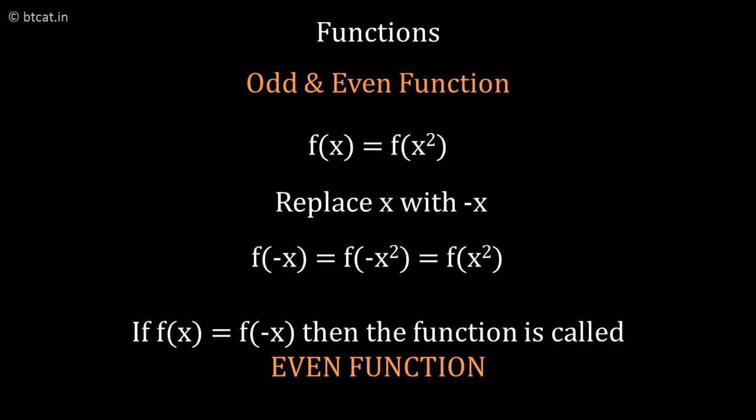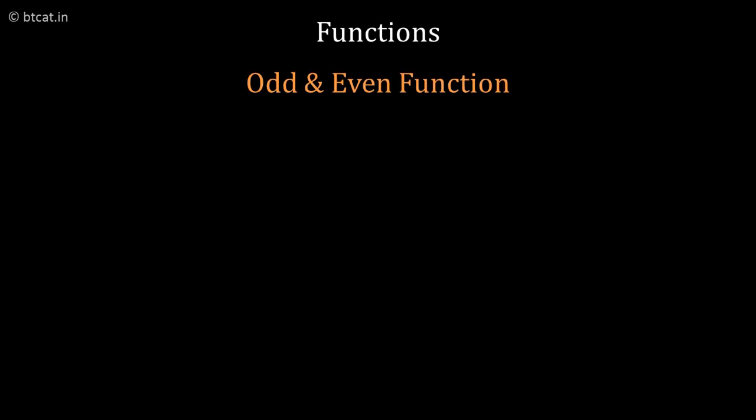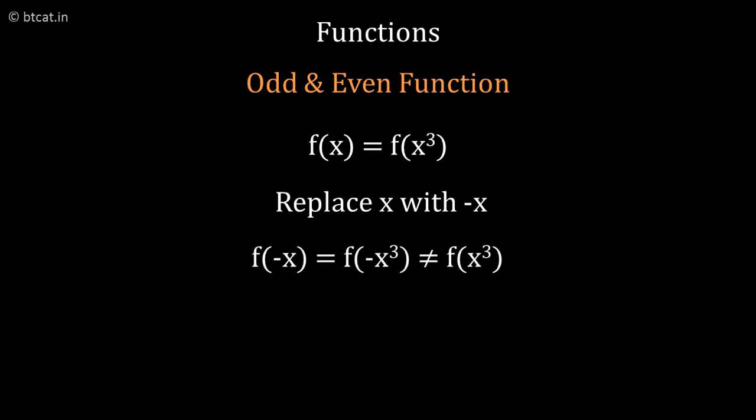So what is odd function then? Again, the same concept: replace x with -x. If I get entire minus answer, it becomes odd function. So f(x) = x³, f(-x) = (-x)³, which is -x³. And therefore, it becomes f(-x) = -f(x). So whenever this happens, these are odd functions.